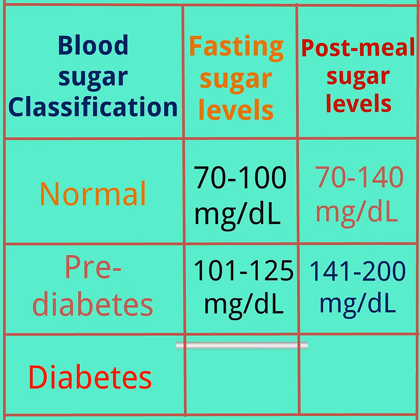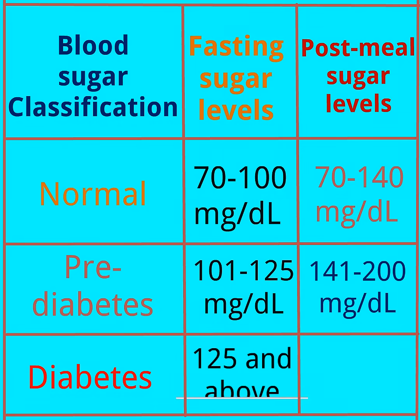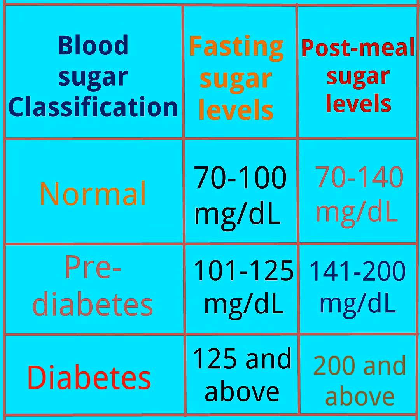A fasting blood sugar level of 125 and above indicates that you have diabetes, and the post-meal blood sugar level will be 200 and above.